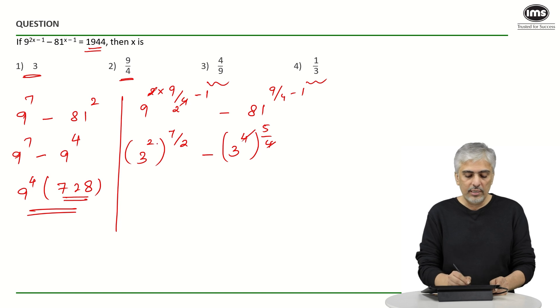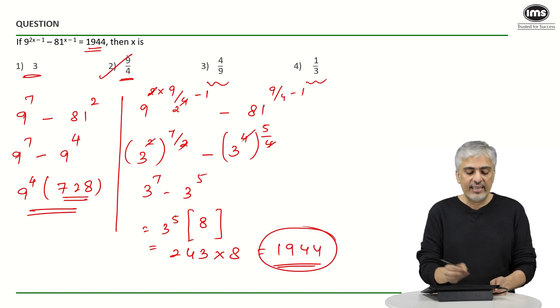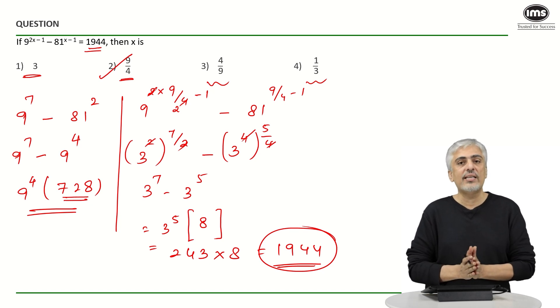4 cut out, you have 2 cut out. So 3 raised to 7 minus 3 raised to 5. You could have taken again 3 raised to 5 common. You are left with 3 square which is 9. 9 minus 1 is 8, which is 243 into 8. And we just saw behind that 243 into 8 is 1944. And that is hence second option is your answer because the right hand side is 1944.